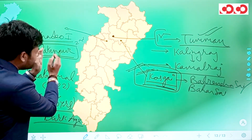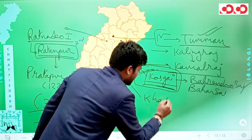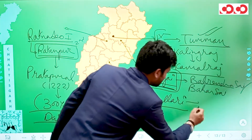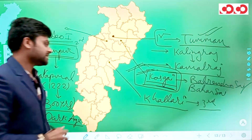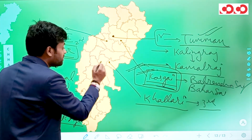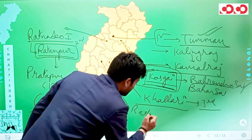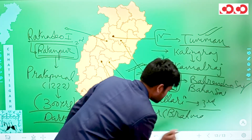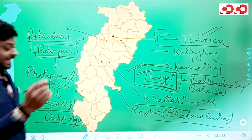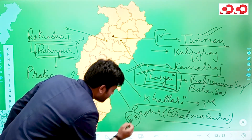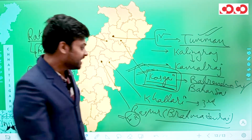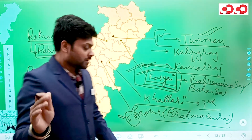During the dark age, one branch of the Ratanpur dynasty settled at Khalari in the Mahasamund district, making Khalari the third capital of the Kulchuri dynasty. Finally, the capital was shifted from Khalari to Raipur by Brahmadev Rai, making Raipur the fourth capital. So we have four capitals, with the fifth still disputed.